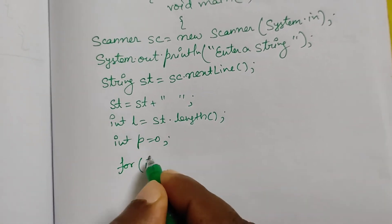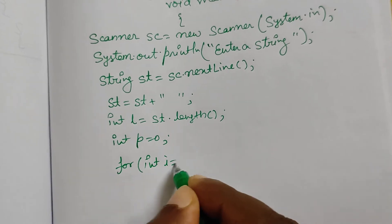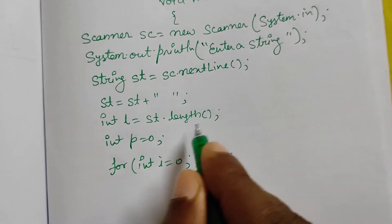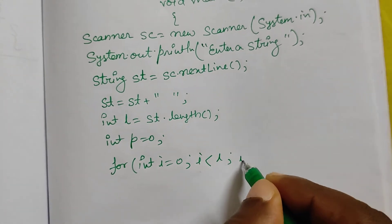Now for loop: for (int i = 0; i < l; i++). l is our length.